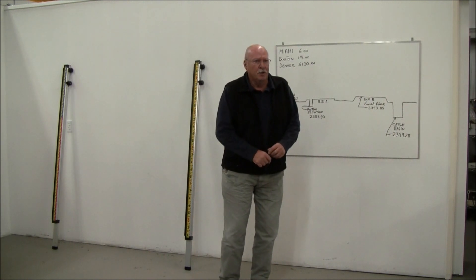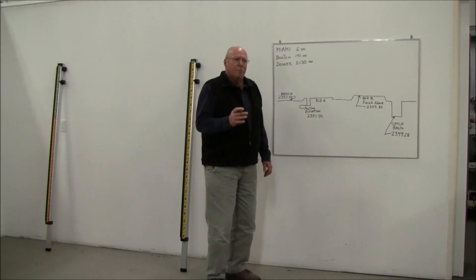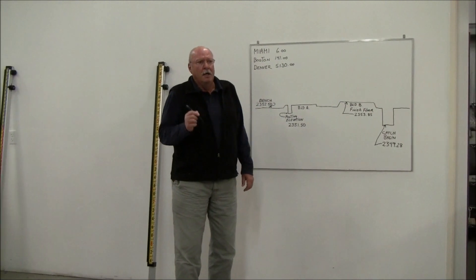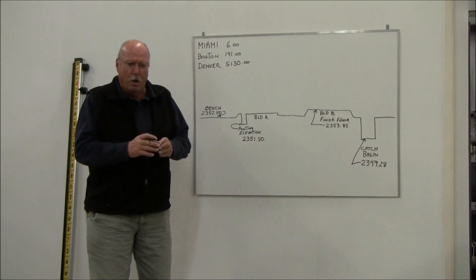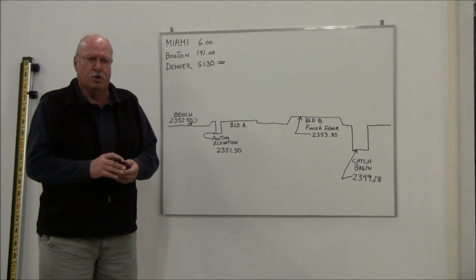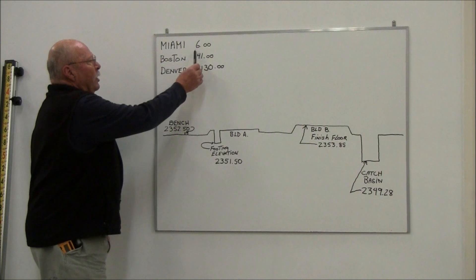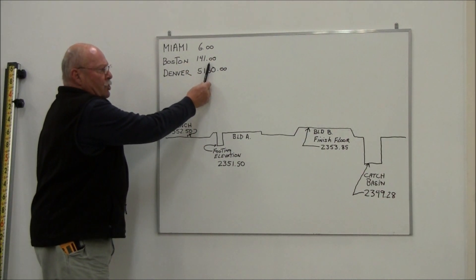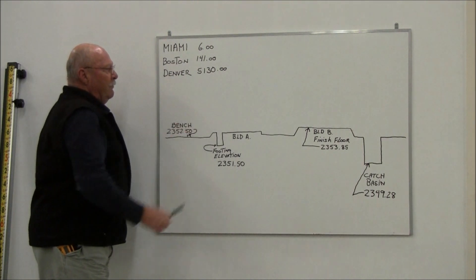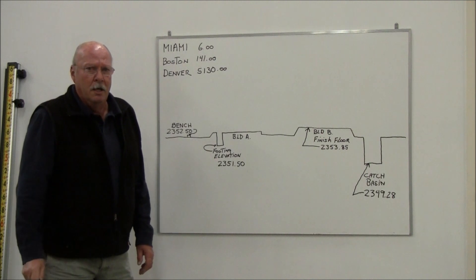Let me start by illustrating how those elevations come about. When a job is set up, typically the job is going to be depicted in true elevation with a starting point which is called your benchmark. That benchmark, for example, if you're in Miami could be 6 feet. If you're in Boston it could be 141 feet. If you're in Denver it could be 5,130 or anywhere in between.